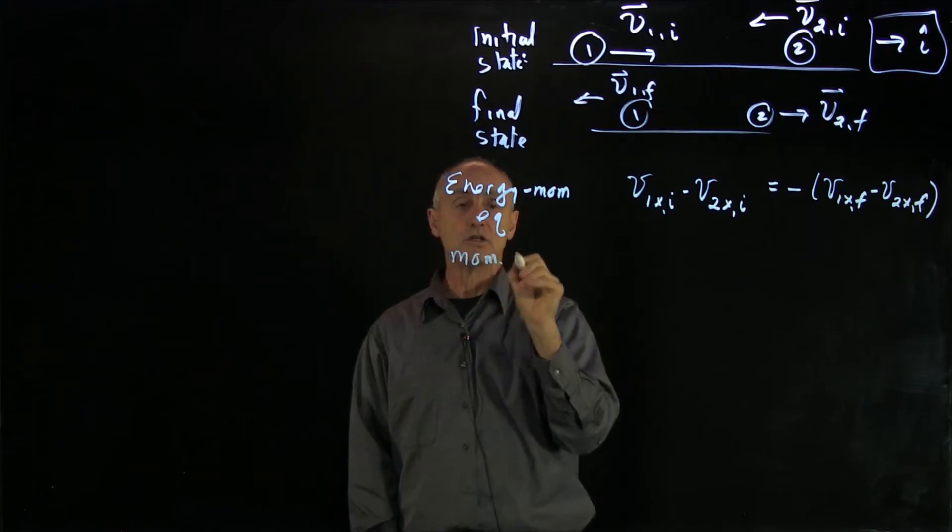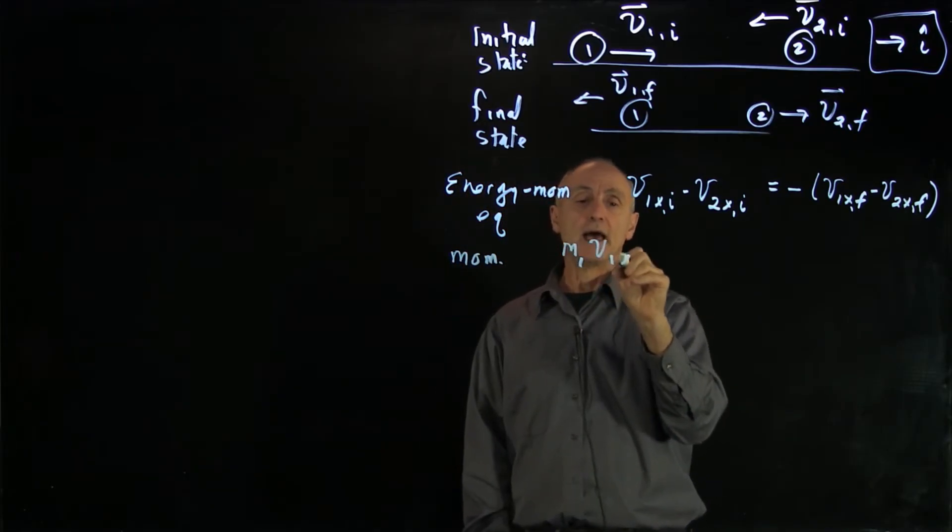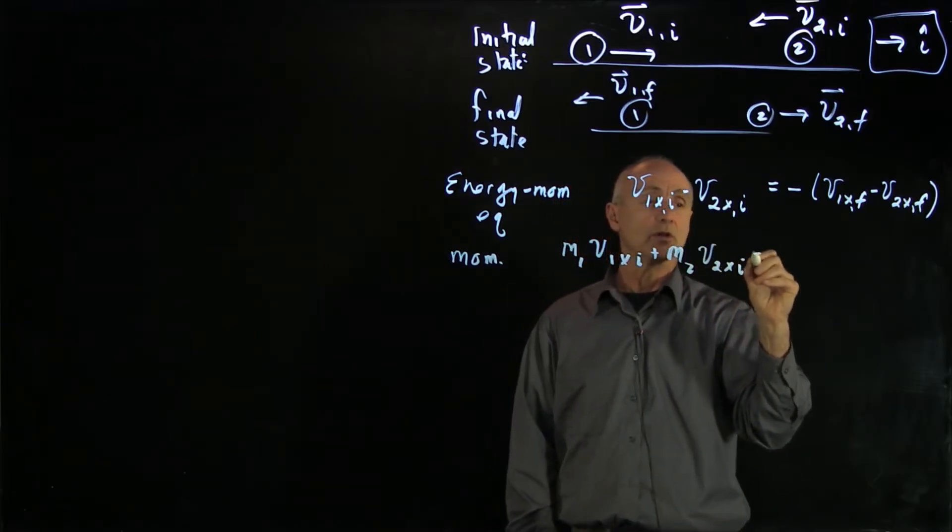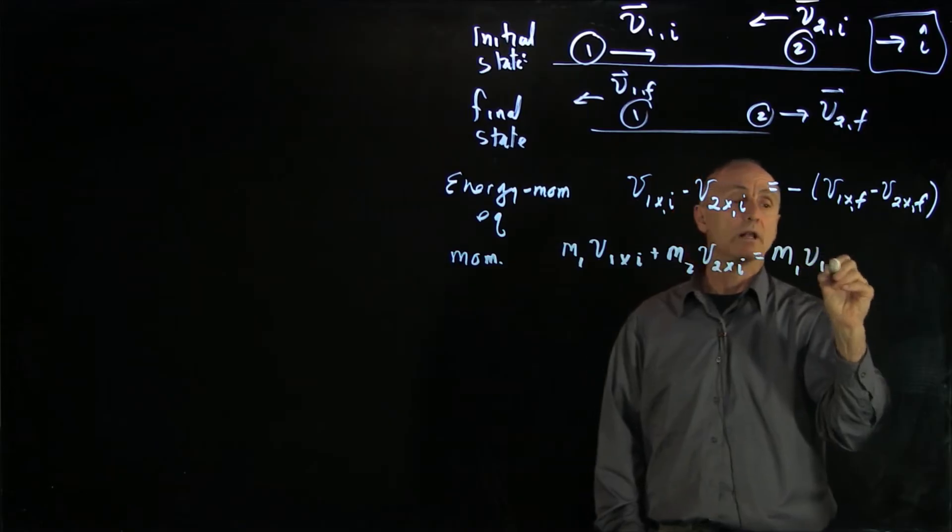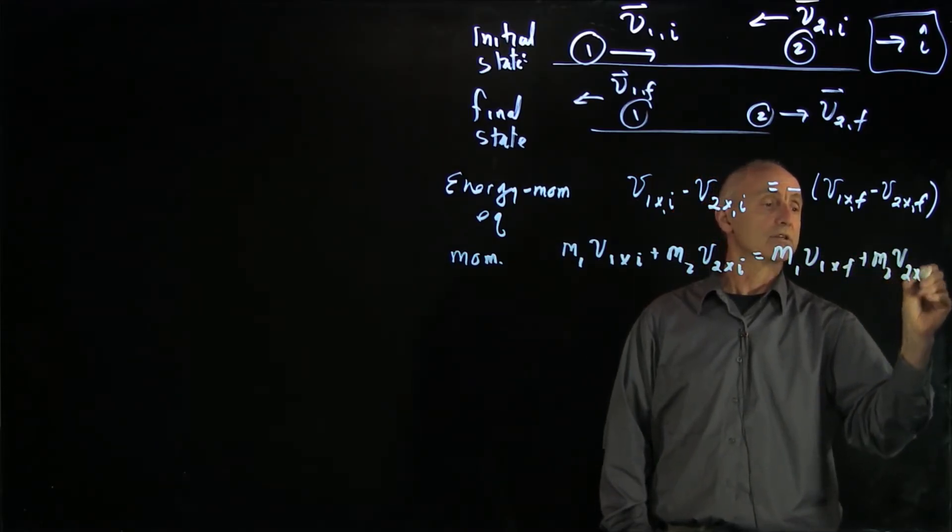Now the momentum condition, that it's constant, was our equation m1 v1 x initial plus m2 v2 x initial equals m1 v1 x final plus m2 v2 x final.